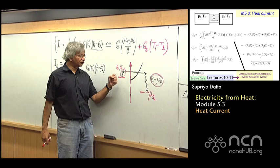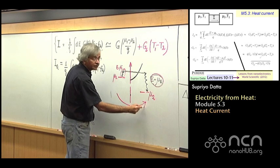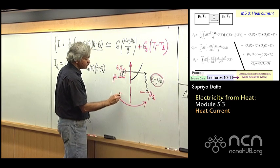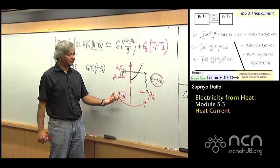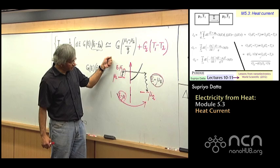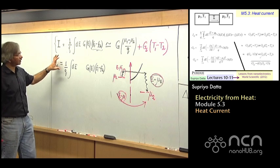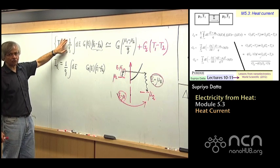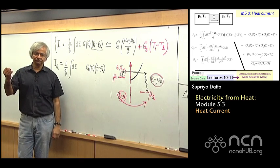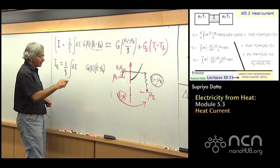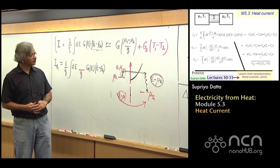So what that means is, every time an electron flows from left to right, there's also a heat current that flows from left to right. The heat current of E minus mu. Every electron carries that much amount of energy, E minus mu, from left to right. Taking E minus mu in from here and dumping it over there. So what that means is, if I'm trying to write the heat current, you see, when I had the charge current, this told me how much charge was carried. So every electron was carrying an amount of charge Q.